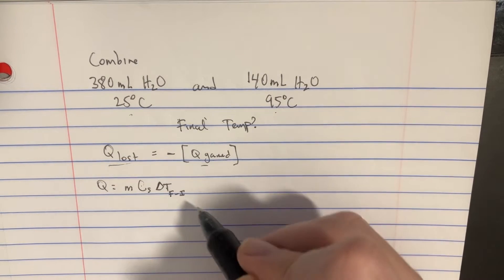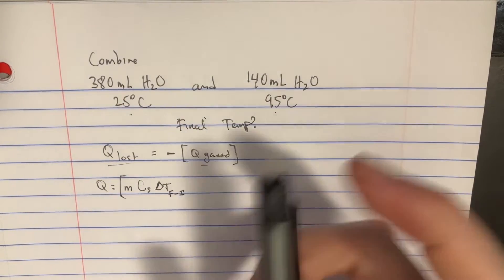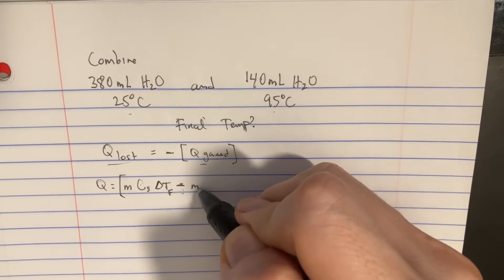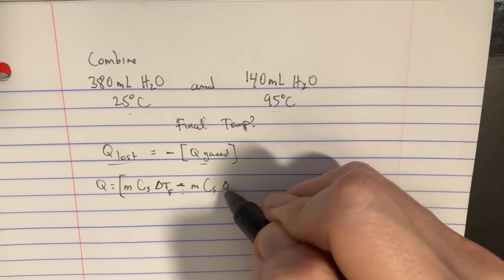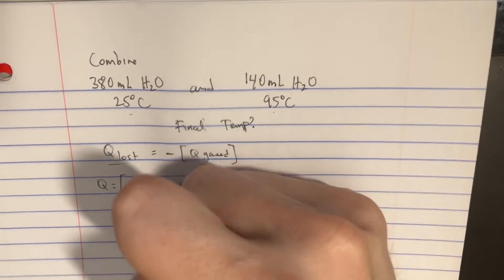So basically, we kind of have two pieces to this. We have the one that's with the final temperature, and then we can actually separate this out and make this another one over here with the initial temperature. And then it wouldn't be a delta here, it would just be just the T's.